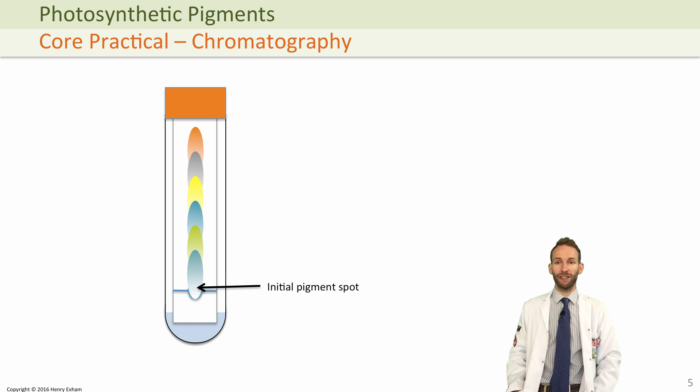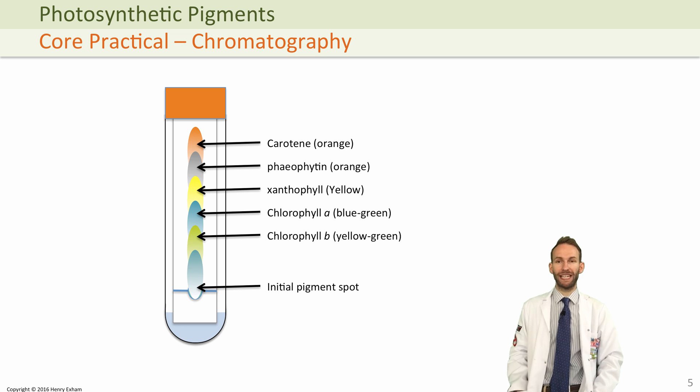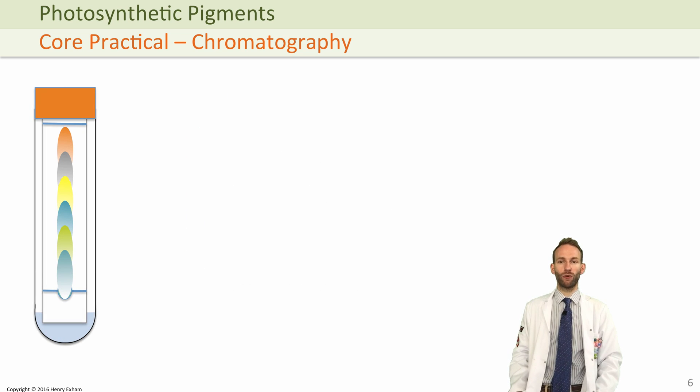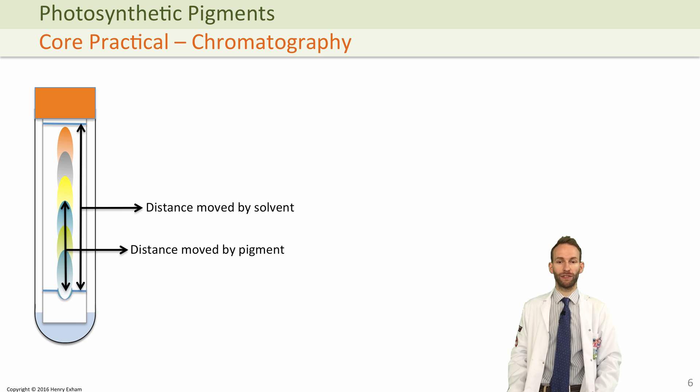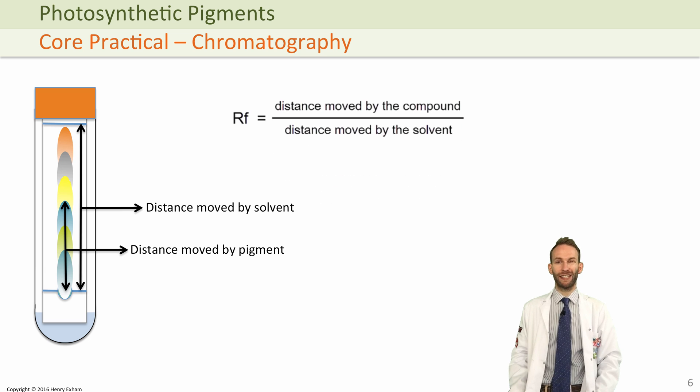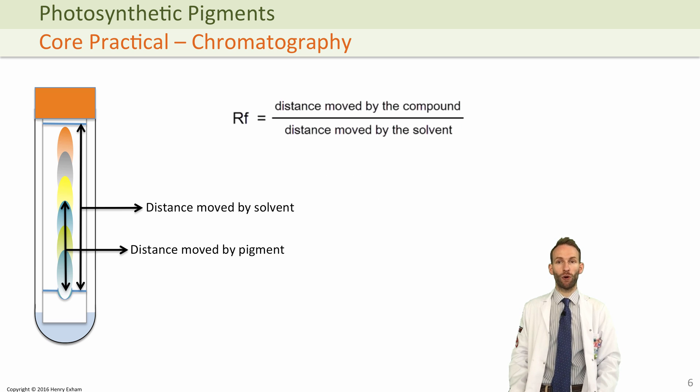And you'll be able to see the different colors of these individual pigments that make up what we refer to in general as chlorophyll. Now what you can do when you finish your chromatography is you can work out something called an Rf value for each pigment. It will be somewhere between 0 and 1, and all you need to do is measure with a ruler the distance moved by the compound and also the distance moved by the solvent. You can then just put it into this very simple equation, and that may well help you identify what that pigment was once you have the Rf value.